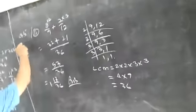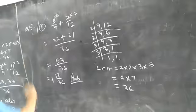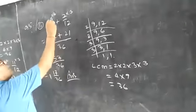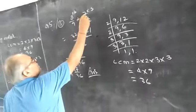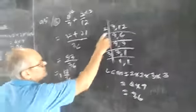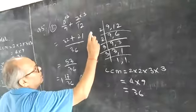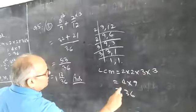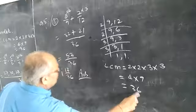Now, you can start question number 5, second part. It is 8 upon 9 plus 7 upon 12. You can take LCM of 9 and 12. LCM of 9 and 12 is equal to 2 into 2 into 3 into 3, that is 4 into 9, that is 36.